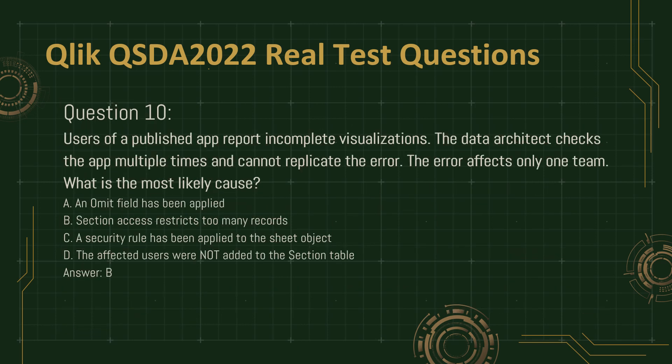Question 10. Users of a published app report incomplete visualizations. The data architect checks the app multiple times and cannot replicate the error. The error affects only one team. What is the most likely cause? A. An omit field has been applied. B. Section access restricts too many records. C. A security rule has been applied to the sheet object. D. The affected users were not added to the section table. Answer: B.